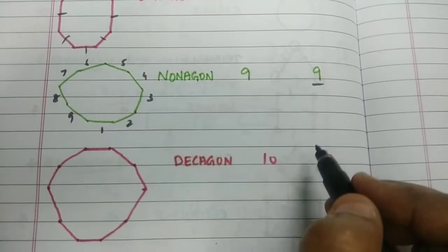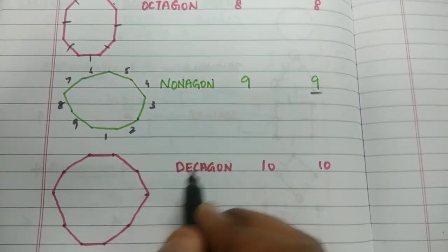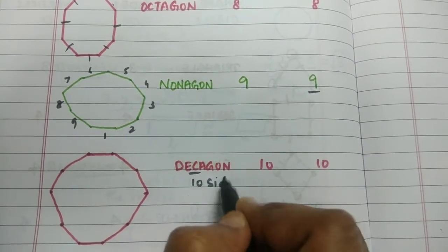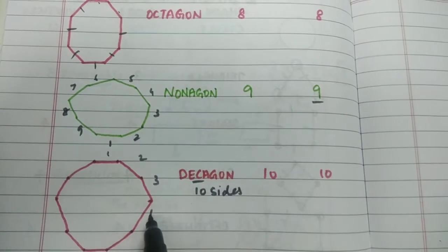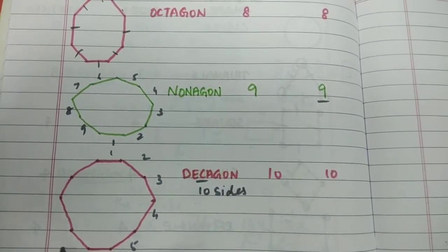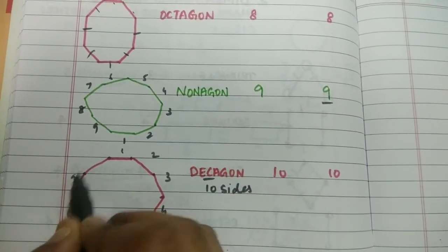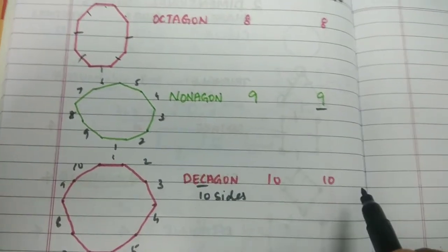Next is a decagon which has ten means ten-sided. So one, two, three, four, five, six, seven, eight, nine and ten sides. And you have ten vertices.